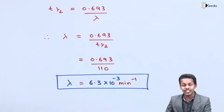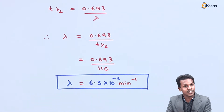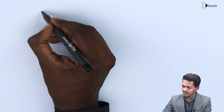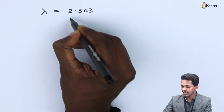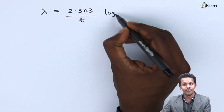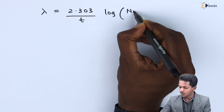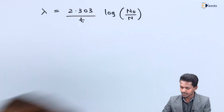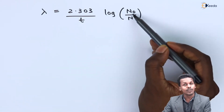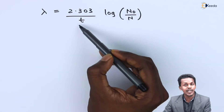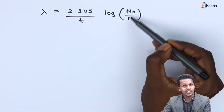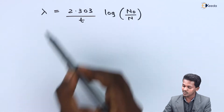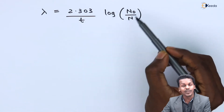This is the value of the decay constant, but this is not the final answer — we need the fraction that has decayed. Using the formula: λ = 2.303 / t × log₁₀(N₀/N). We have the value of t (20 minutes) and lambda, so we can substitute and solve for N₀/N.